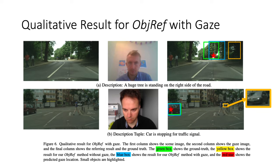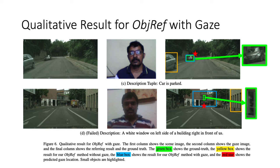We show three successful results with full description and with ejected tuples, and one failed case. One interesting case is figure B, where the description is 'car is stopping for traffic signal.' There is a car close to the camera to the left and several cars on the opposite direction, and the audience is looking at the car to the left. Without gaze information, the model finds the car on the opposite direction. However, with the gaze information, the model can successfully find the car to the left. Here are more qualitative results.